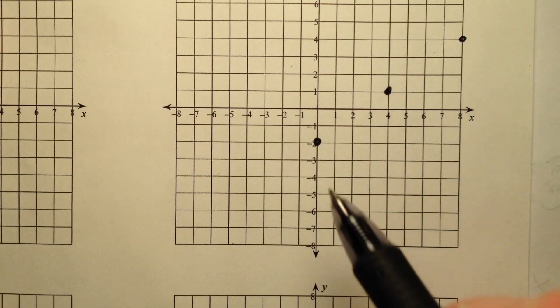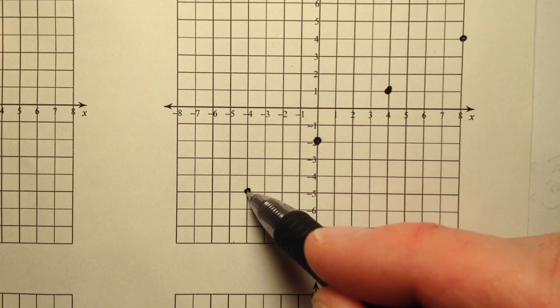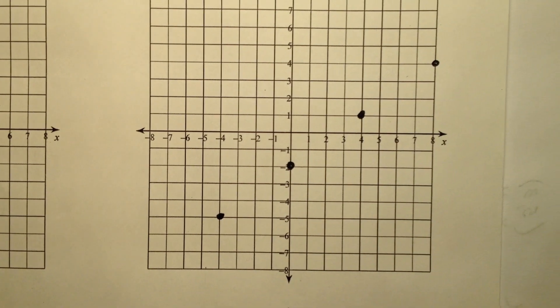I can also go back the other way, and I can go down 3 and back this way 4. And you'll notice that all those points will be collinear.